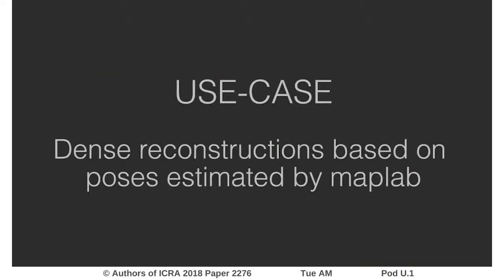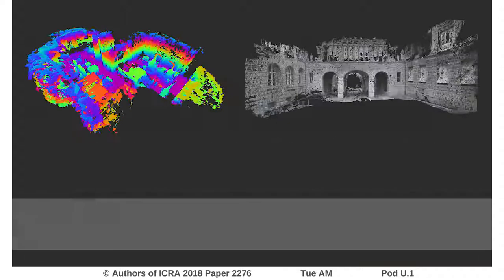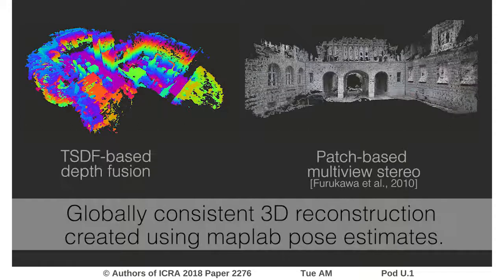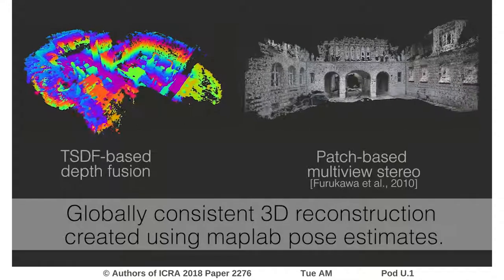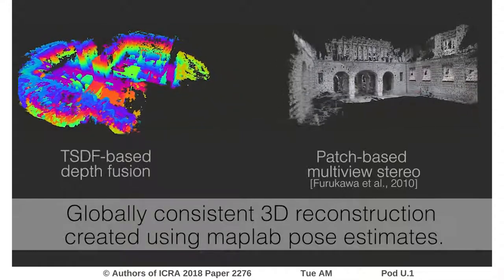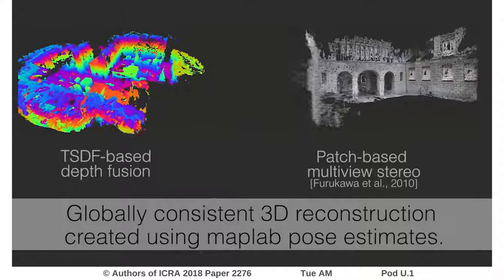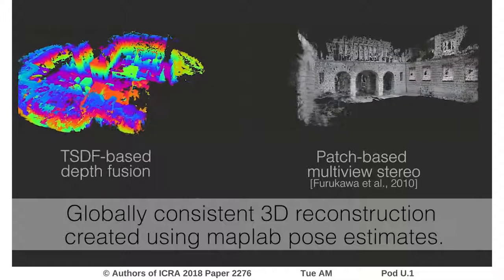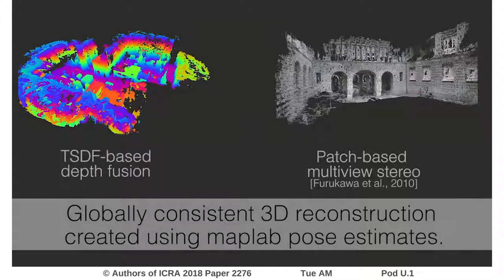The refined global poses can also be used to obtain a dense reconstruction of the environment. The available methods include stereo matching, TSDF-based depth fusion, and an interface to PMVS.